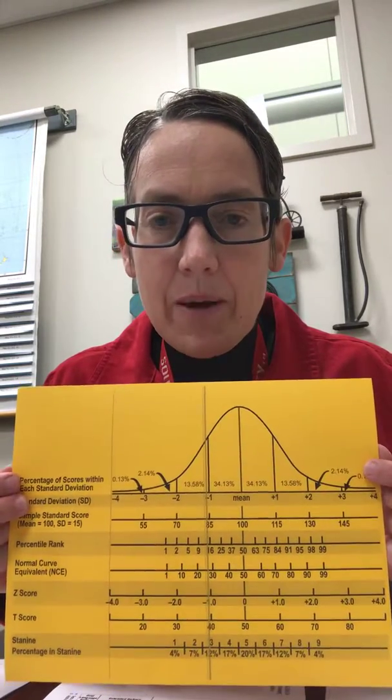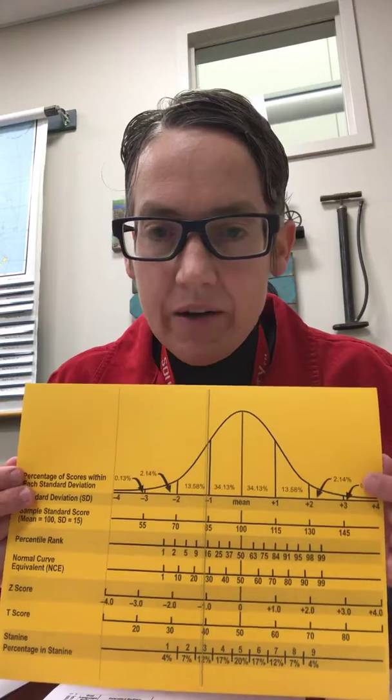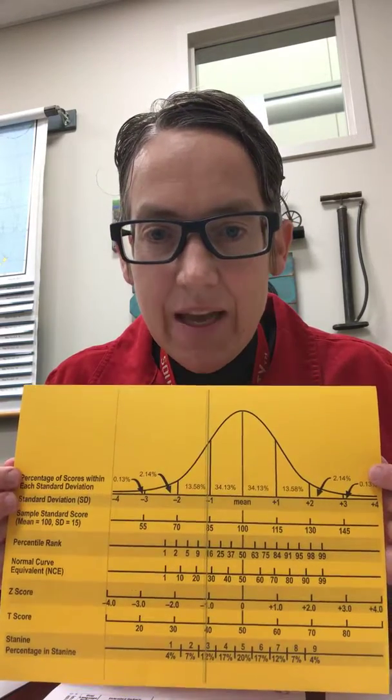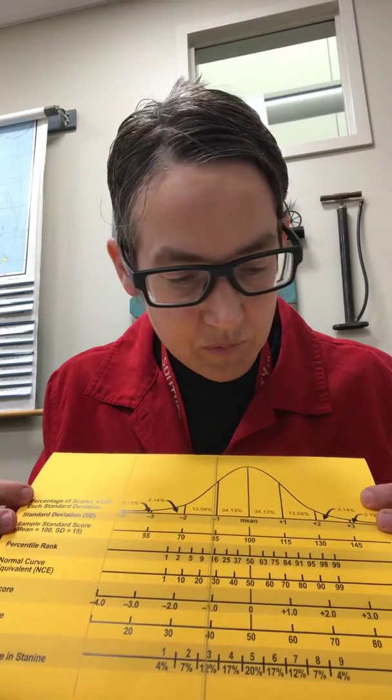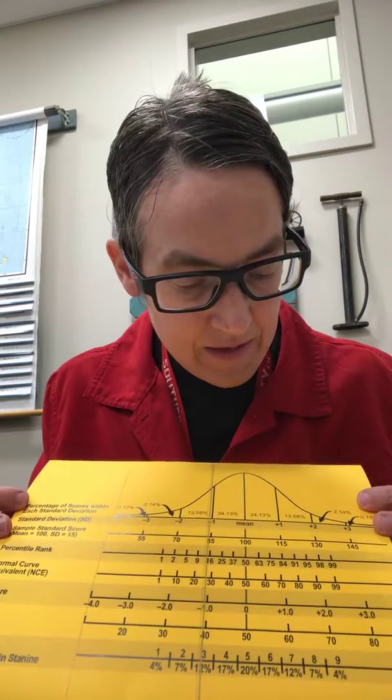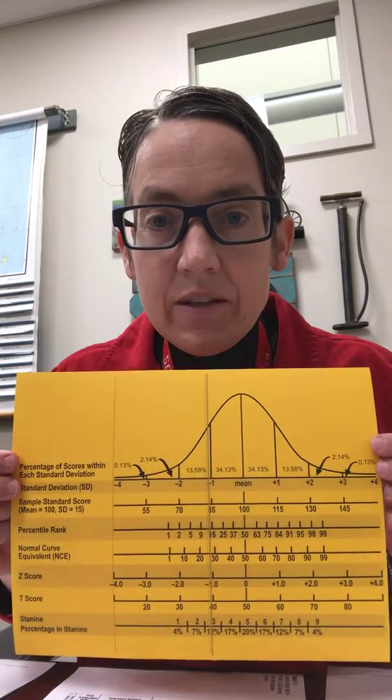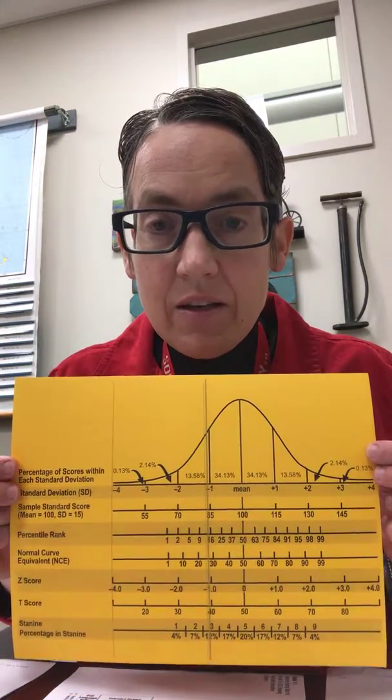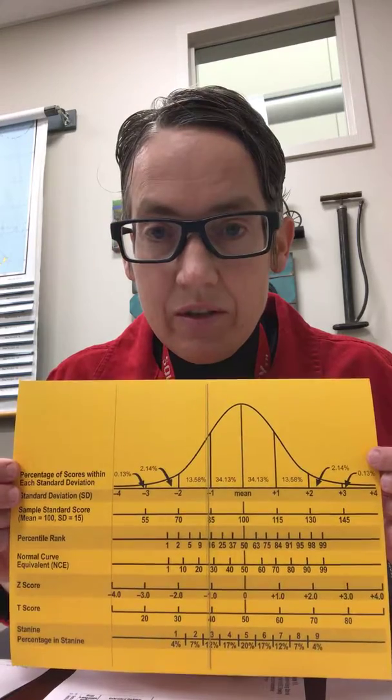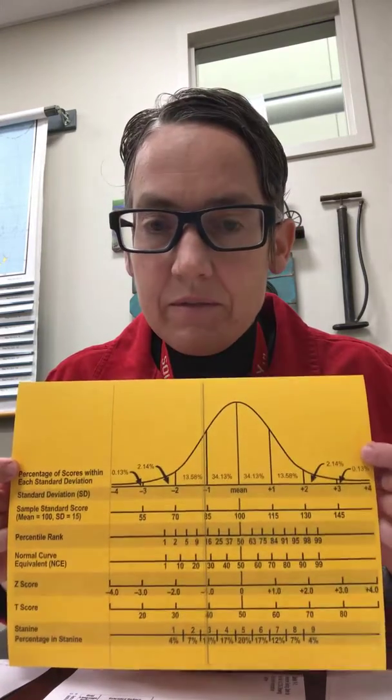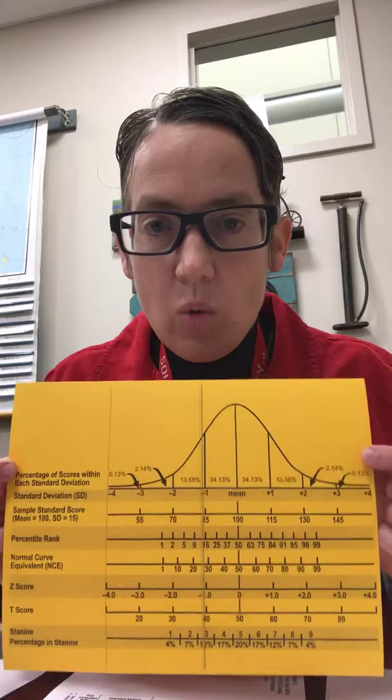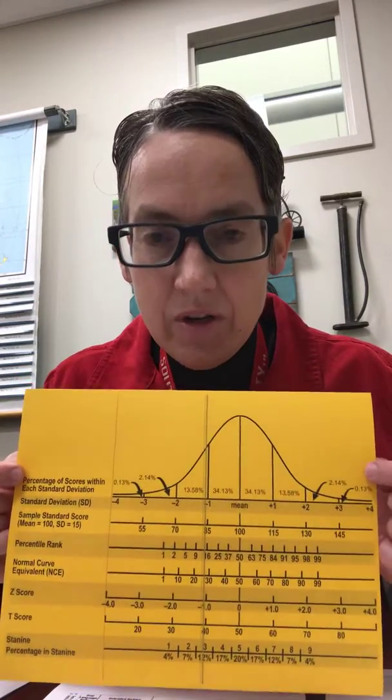For example, if somebody has a T-score of 70, that's pretty good, that's high average. But if that T-score is in aggression, if they are really aggressive, that's not a good thing. So we'll get into that when we talk about behavior skills rating scales and how to interpret behavior results.